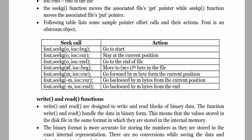If we give a digit m with ios::beg, it means go to the m-th byte from the beginning, so the pointer points to byte m+1. With ios::cur, offset m means move forward m bytes from the current position. A negative offset -m with ios::cur means go backward by m bytes from the current position. And -m with ios::end means go backward by m bytes from the end of the file.